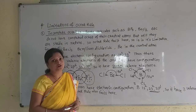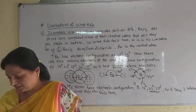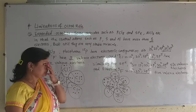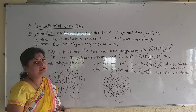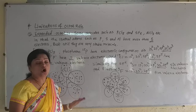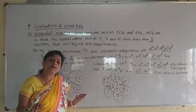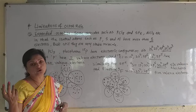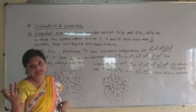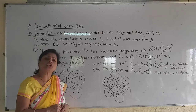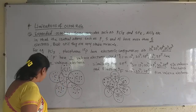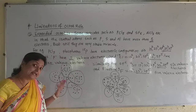Now let us consider the second limitation of the octet rule — that is the expanded octet. What is that? In the incomplete octet, we took the example of boron trifluoride. You may also take the example of boron trifluoride with fluorine — atomic number 9, electronic configuration 1s2, 2s2, 2p5. Now come to the second limitation of the octet rule — the expanded octet. That means more than 8 electrons.